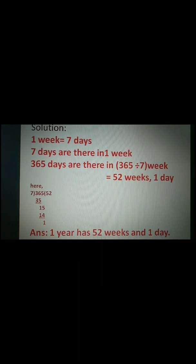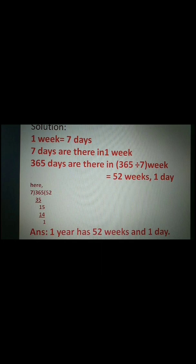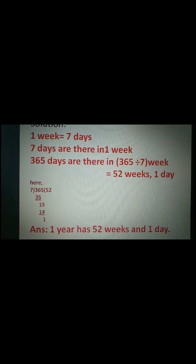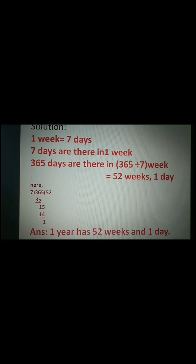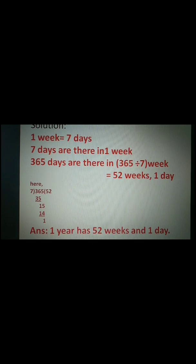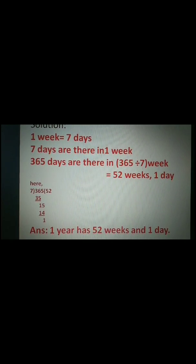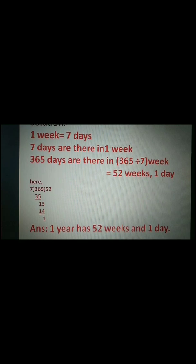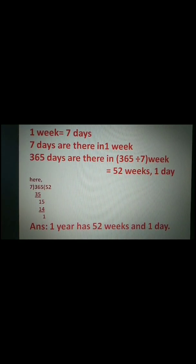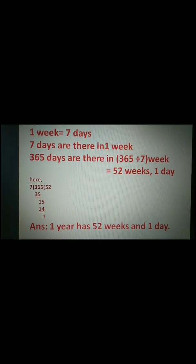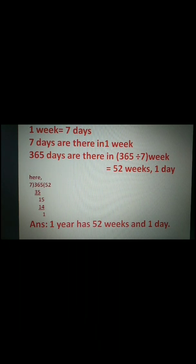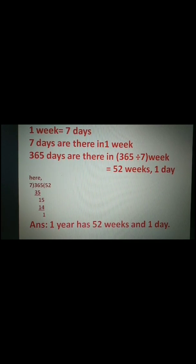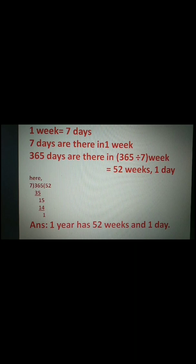Then we write the answer: one year has 52 weeks and 1 day. Sometimes students write the answer incorrectly — for example, writing '365 days' in the answer, but that is already given in the question, so we do not write it again. We write only what the question is asking for: if it asks for only weeks, write only weeks; if it asks for weeks and days, write both. Do not write anything extra.